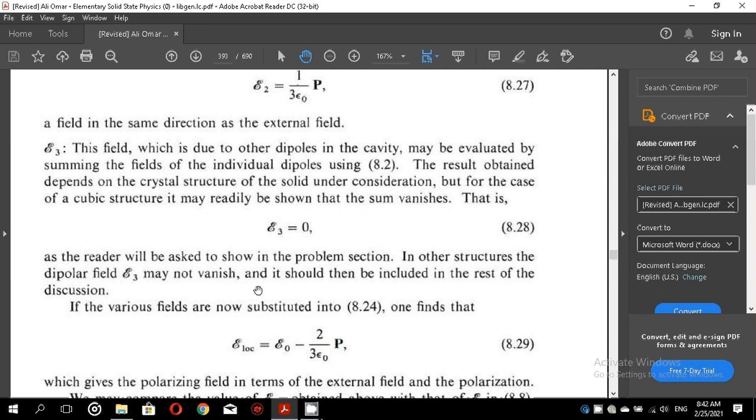E3, the field which is due to other dipoles in the cavity may be evaluated by summing the fields of the individual dipoles using equation 8.2. The result obtained depends on the crystal structure of the solid under consideration. But for the case of a cubic structure, it may readily be shown that the sum vanishes, that is E3 equals 0, as the reader will be asked to show in the problem section.